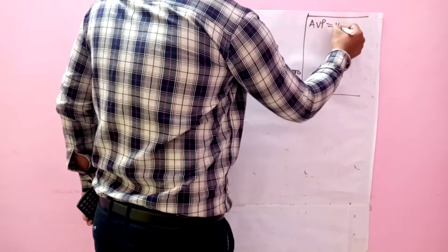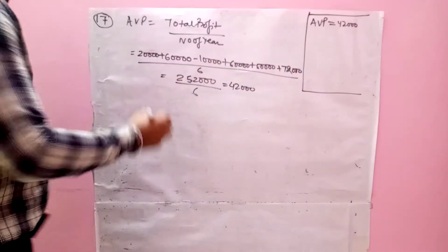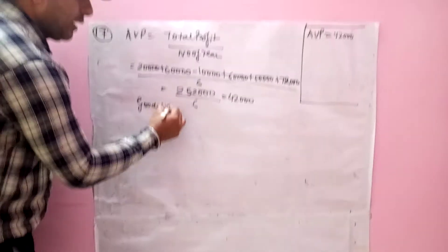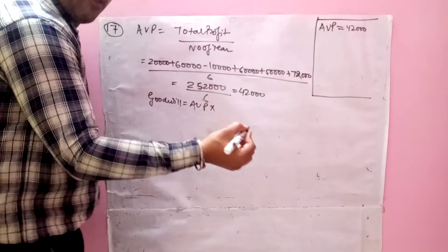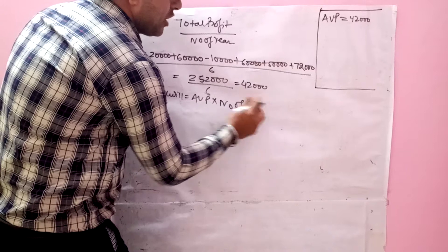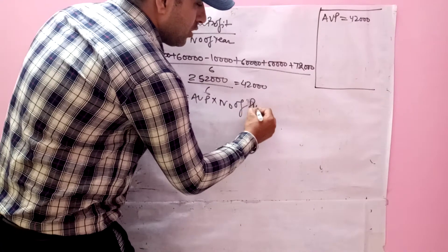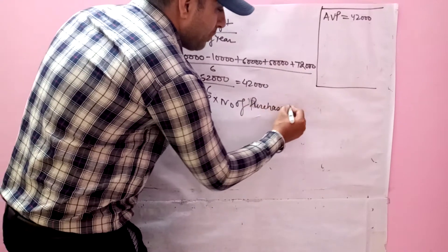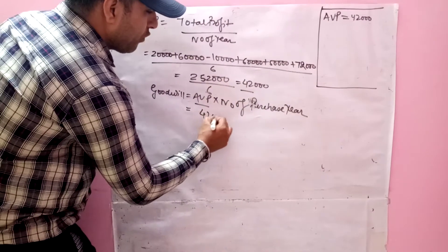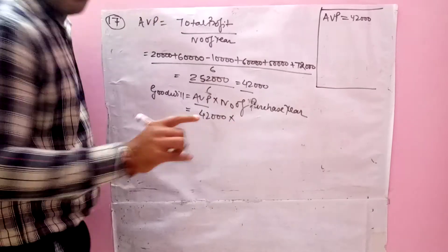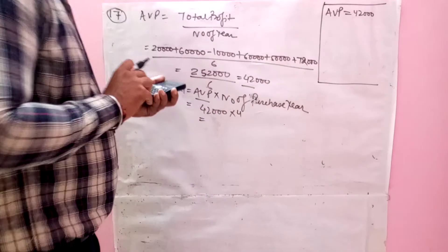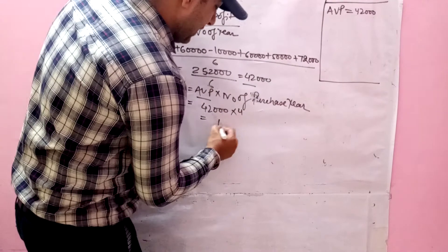Average profit is $42,000. Now to calculate goodwill: goodwill equals average profit (AVP) multiplied by number of years purchase. AVP is $42,000 and number of years purchase is 4. So goodwill = $42,000 × 4 = $168,000.